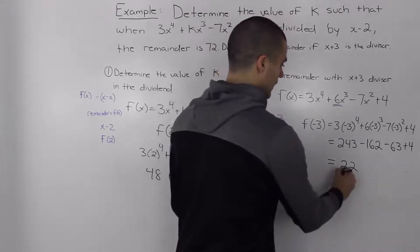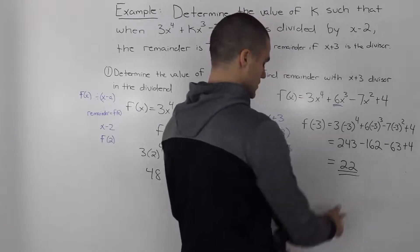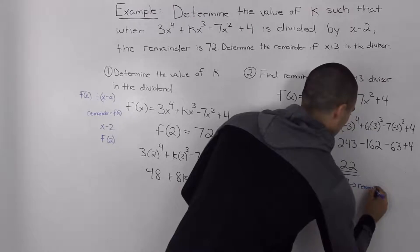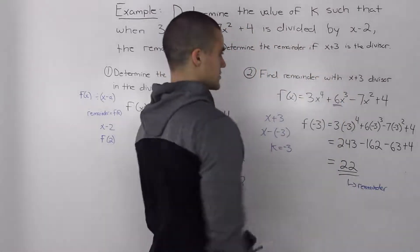And then when you net all that out, you get a value of 22. So this here represents our remainder. And that is when the divisor is x plus 3.